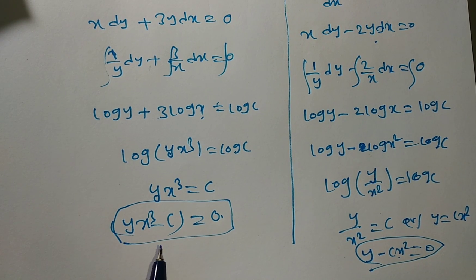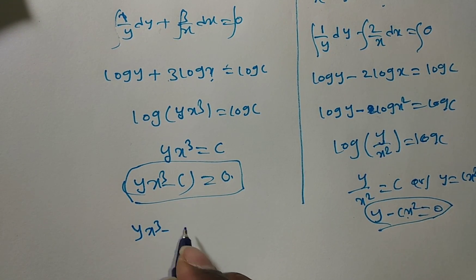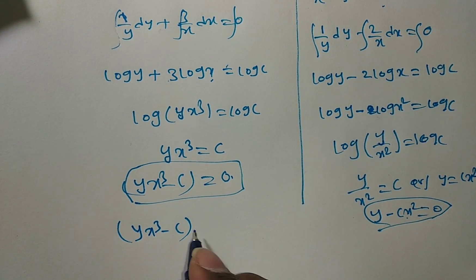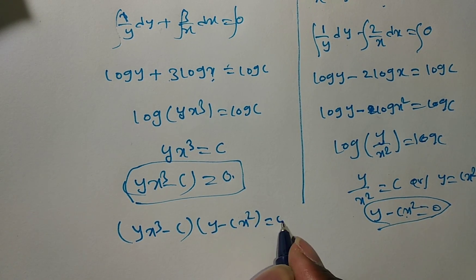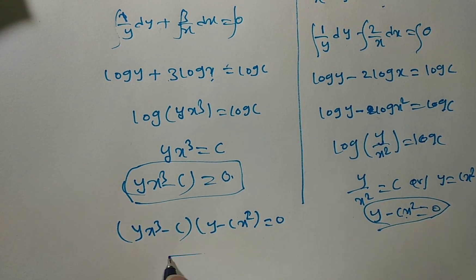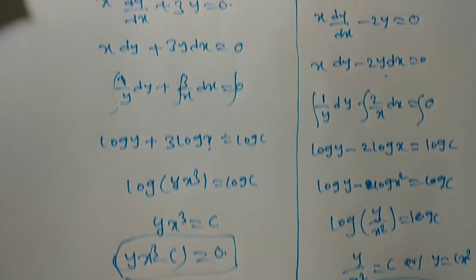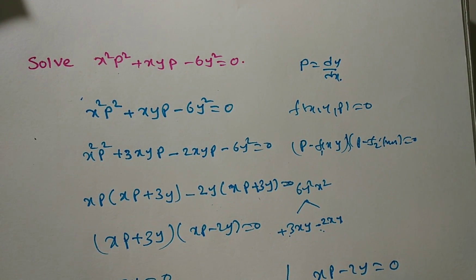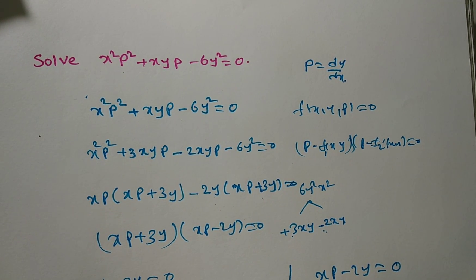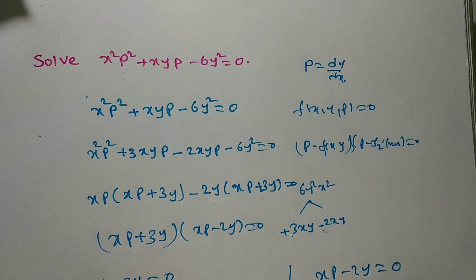Multiplying the two solutions together: (yx³ minus c)(y minus cx²) equals zero. This is the complete solution of the given problem x squared p squared plus xyp minus xy squared equals zero.